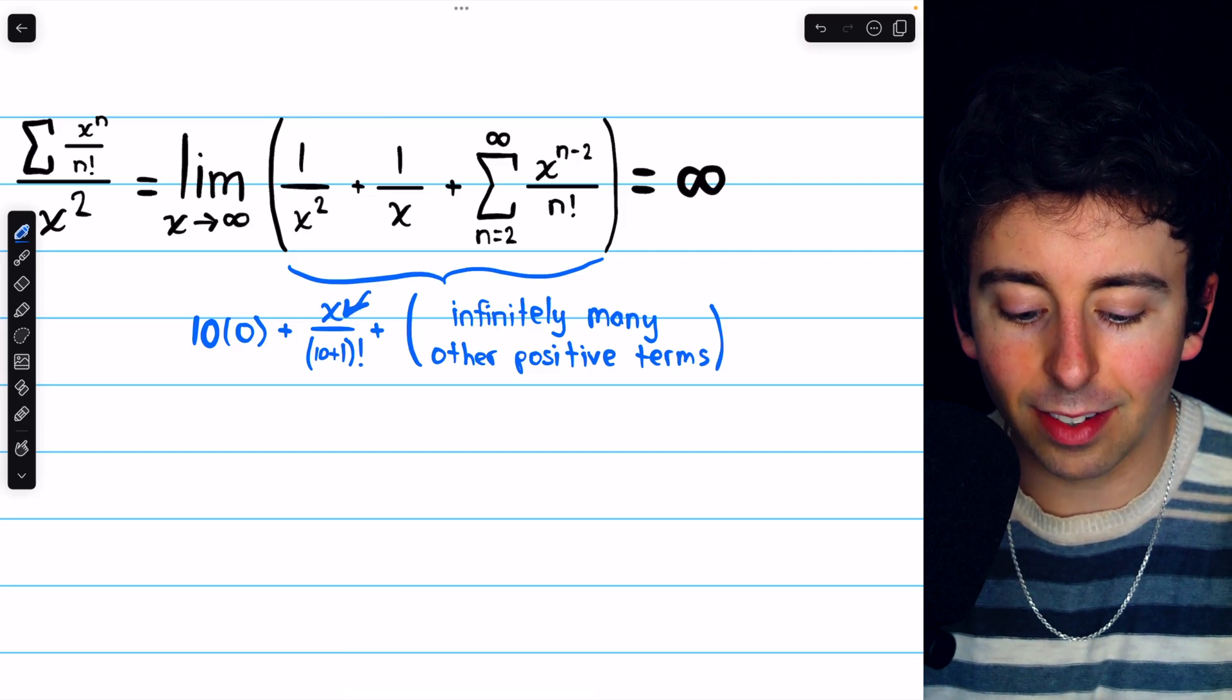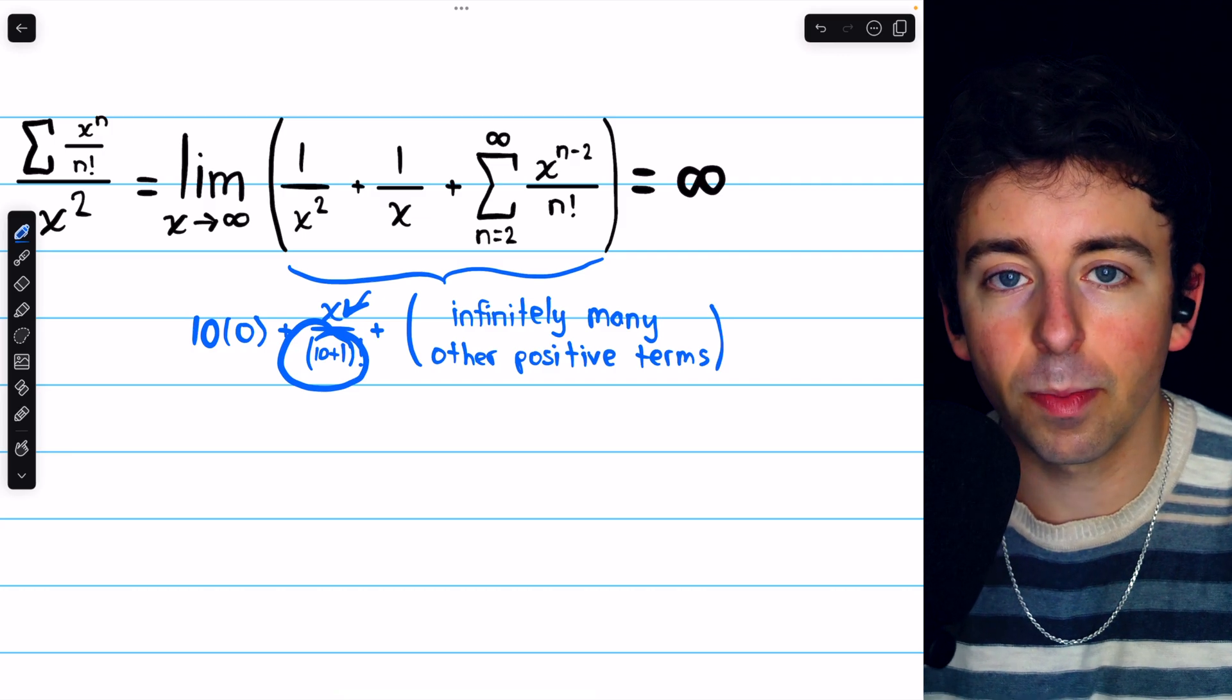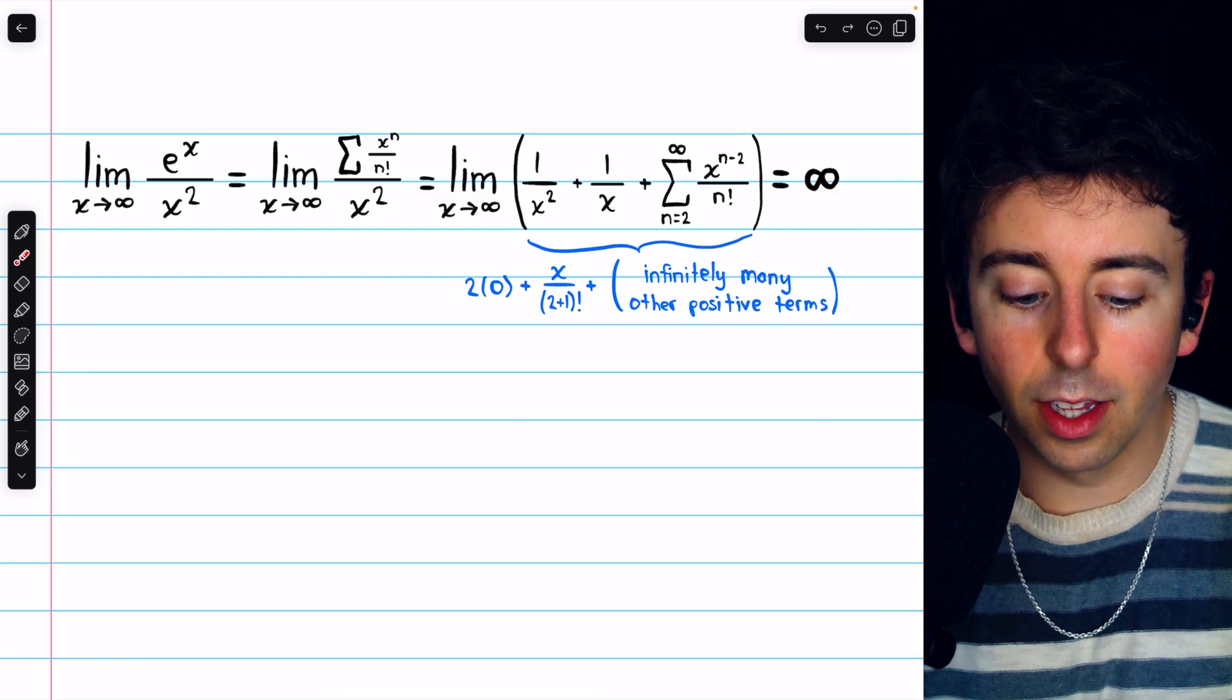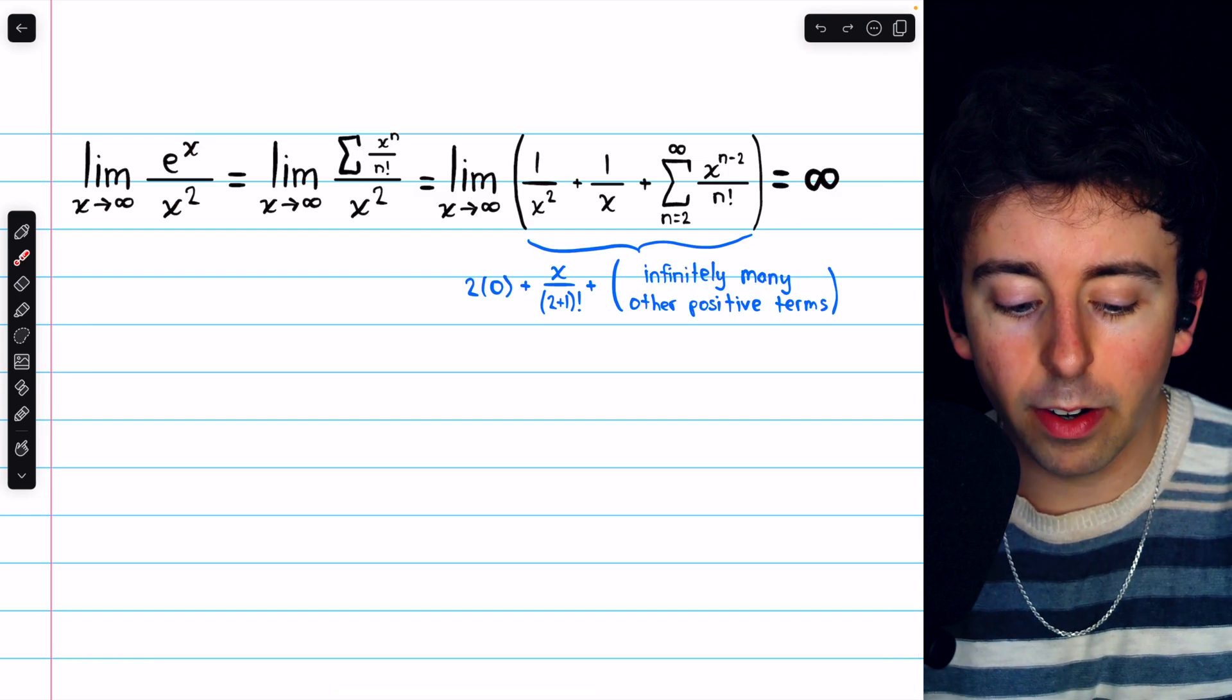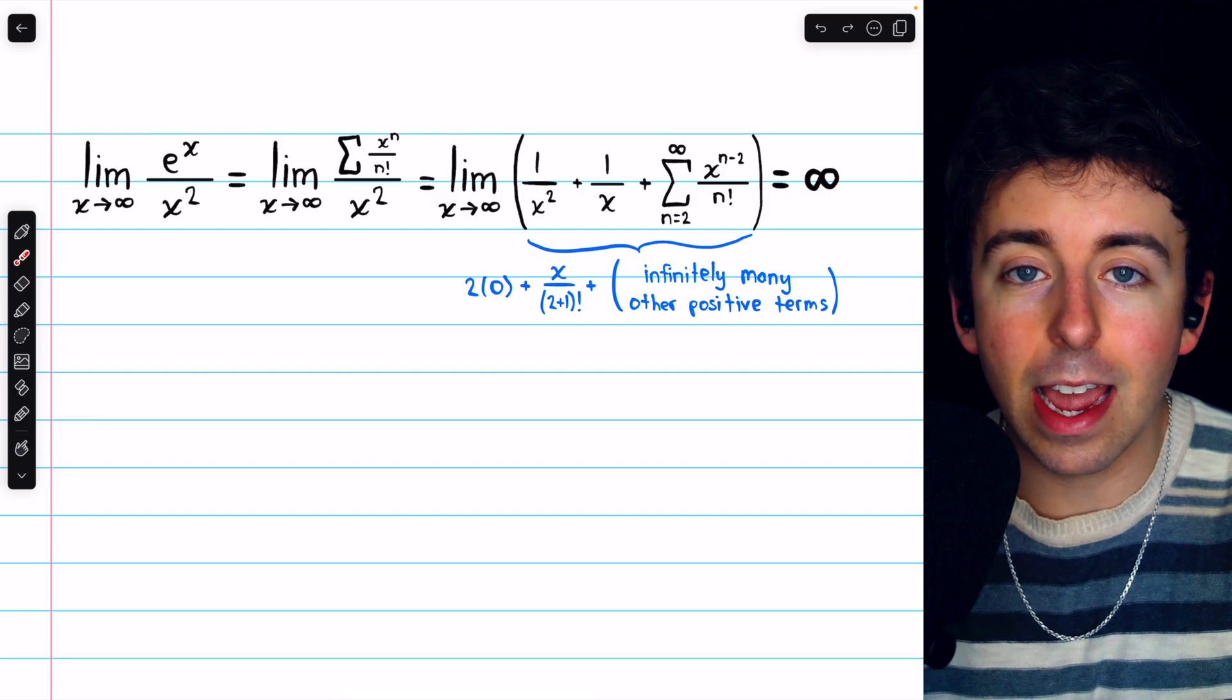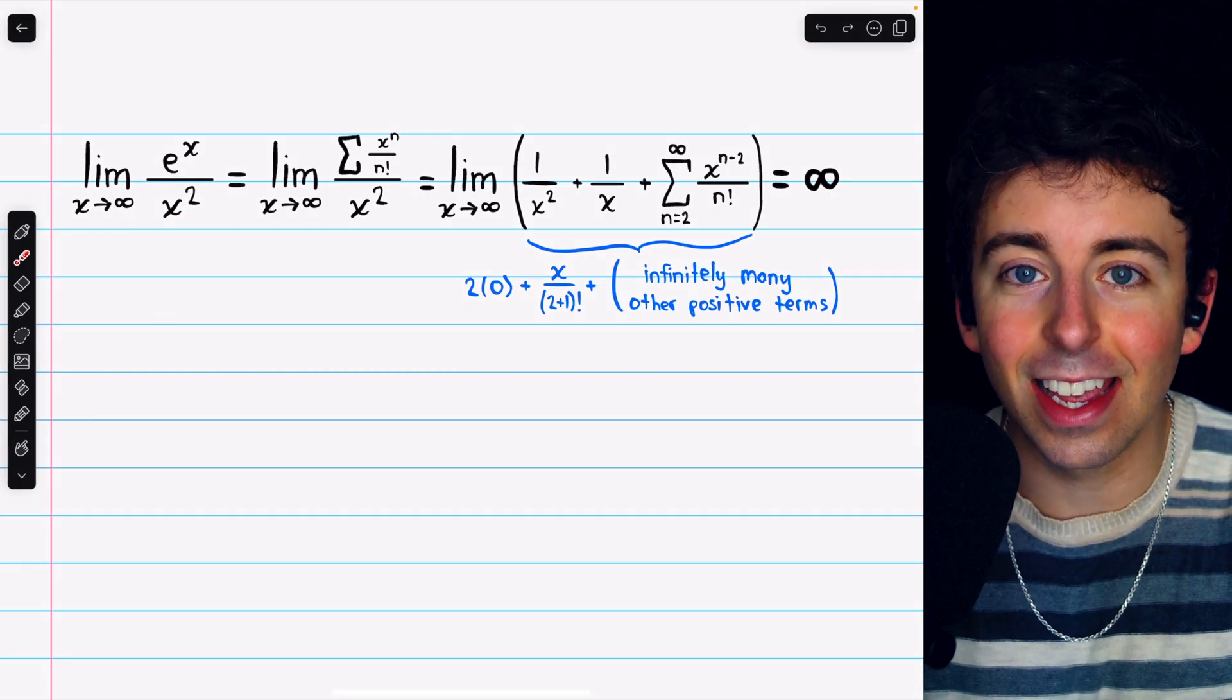And we would have x getting arbitrarily large, divided by some fixed integer in the denominator, plus infinitely many other positive terms. So indeed, the limit of e to the x over x squared as x goes to infinity is infinity. And this is the behavior of the series, no matter what that power of x is.